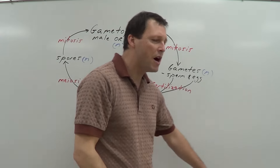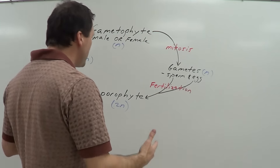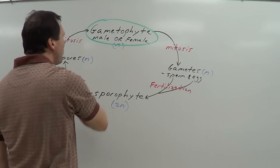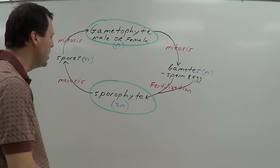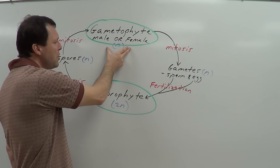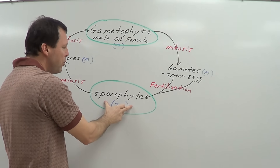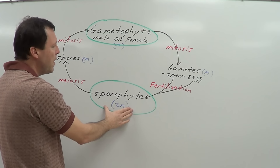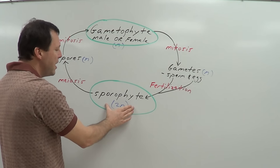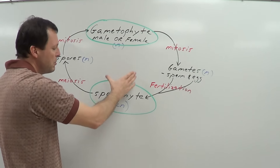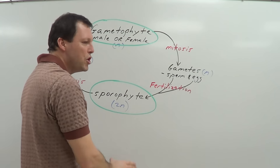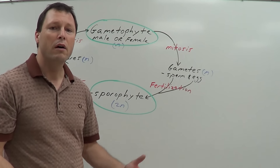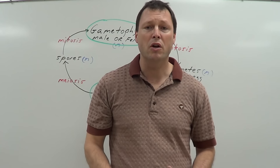Let's quickly review. We talked about an alternation of generations — what generations are actually alternating? The gametophyte is one generation and the sporophyte is another. The gametophyte has one set of chromosomes, and its offspring the sporophyte is 2N, diploid, two of each type of chromosome. Then their kids are the gametophytes, and their kids are the sporophytes, alternating back and forth between haploid and diploid generations. This is called an alternation of generations, and that's it for the life cycle of green algae.